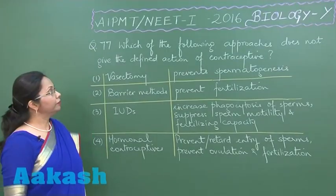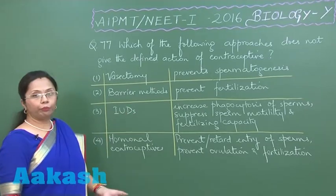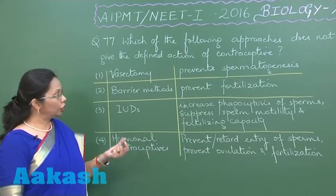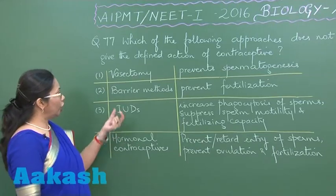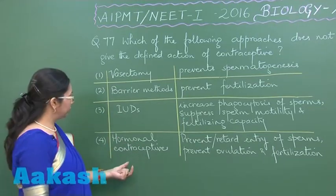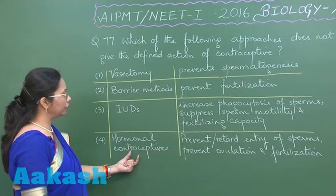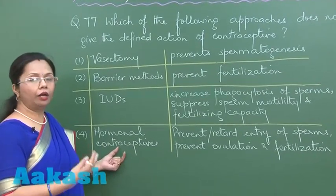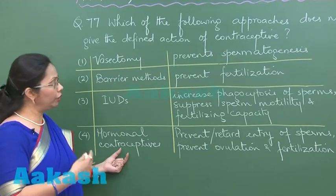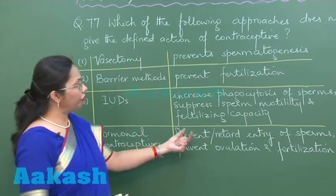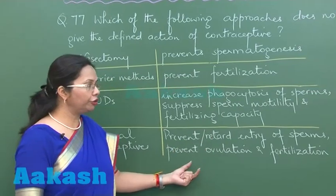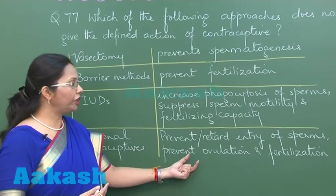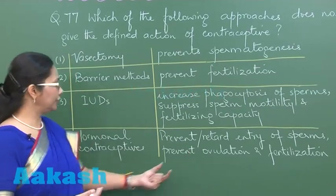In this question, which of the following approaches does not give the defined action of the contraceptive? In this column, we have different contraceptives like hormonal contraceptives. They use a combination of estrogen and progesterone, or only progesterone, which prevents or retards the entry of sperm because progesterone thickens the cervical mucus. It will also prevent ovulation and hence fertilization.